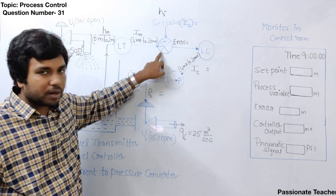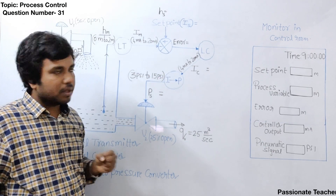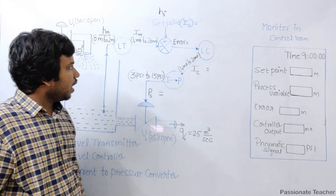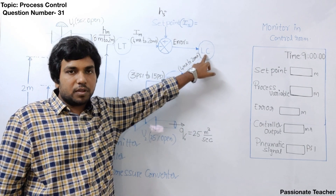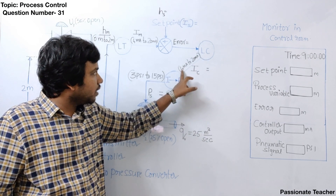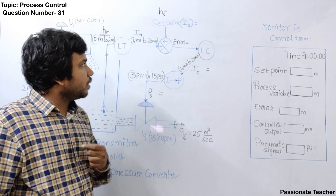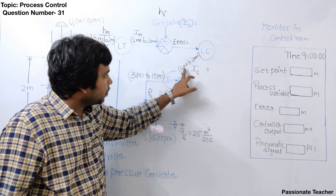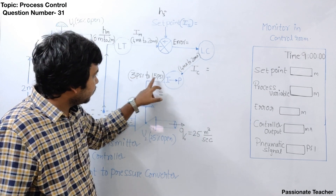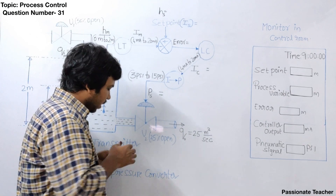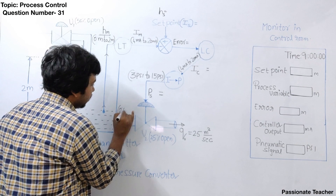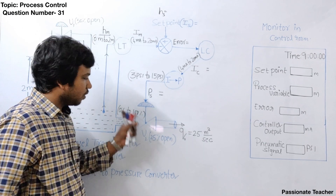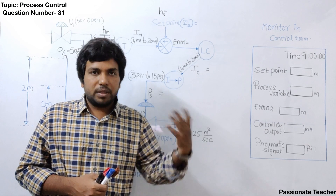Once the measured value is given to the error detector, it subtracts the measured value from the desired value, and the error signal goes to the controller. The electronic controller built with operational amplifiers generates a standard current in the range of 4 mA to 20 mA. This 4–20 mA current is then converted to a standard pressure of 3 psi to 15 psi, which corresponds to 0% to 100% valve opening. Zero percent open means the valve is fully closed; 100% open means the valve is fully open.